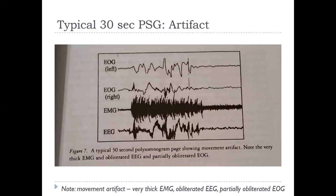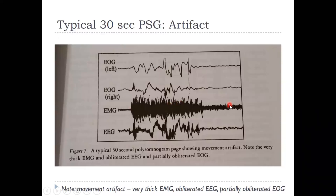An artifact is essentially movement interference. Here you can see one — it's so severe that it's interfering with the EOG right eye electrode, and the left eye as well is completely off the chart. The EEG is also completely off the chart. That's just somebody moving around to get comfortable, and you actually can't read that data — you have to edit it out.